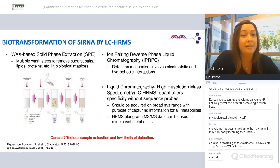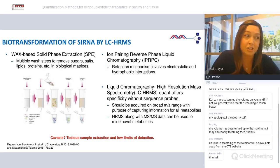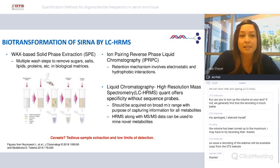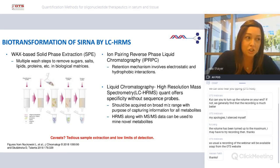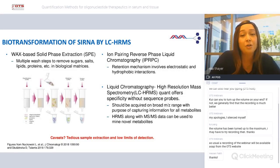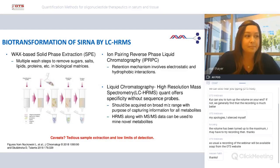Next, we have biotransformation of siRNA by LC high-resolution mass spec. This requires sample extraction and cleanup, which we perform with WAX — weak anion exchange solid phase extraction. This involves multiple wash steps to remove sugars, salts, lipids, and proteins from your biological matrices. We then do ion pairing through reverse phase liquid chromatography before shooting it on the high-res mass spectrometer. With this technique, we can gain important data about novel metabolites generated from both in vivo and in vitro samples. While the extraction is tedious, there are no sequence-specific probes needed, so we can easily look at multiple sequences at once.